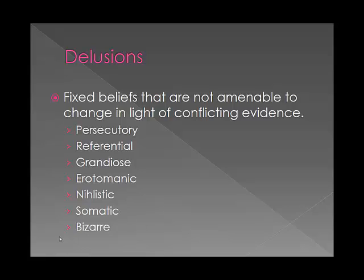There are different types of delusions. Persecutory is somebody coming after me. Referential is when they think famous people out in the world are doing things as a communication to them — for instance, if I saw the president scratch his nose, that means I need to do A, B, and C. Grandiose means they think they have exceptional abilities or are famous. Erotomanic is about relationships — they believe someone is in love with them. Nihilistic is that something bad is going to happen soon. Somatic is a preoccupation with their health. And bizarre delusions are ones that are clearly implausible.